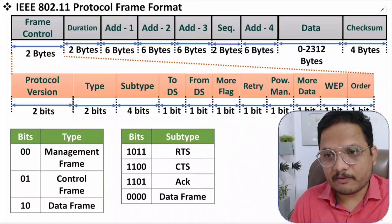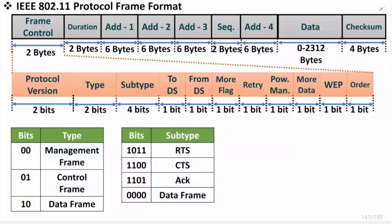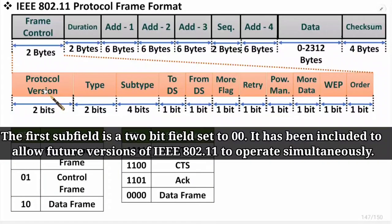Now let's look at the Wi-Fi frame format. The frame control field is 2 bytes and contains multiple sub-fields. The first sub-field is protocol version (2 bits), which stays 00 and is reserved for future versions of IEEE 802.11 protocol.